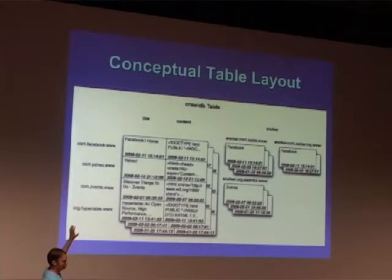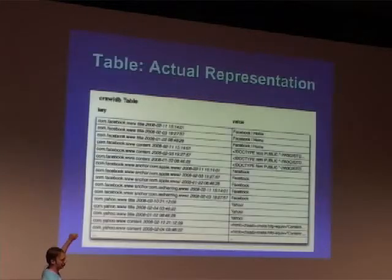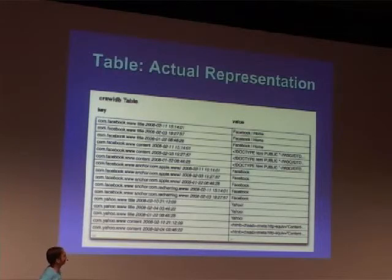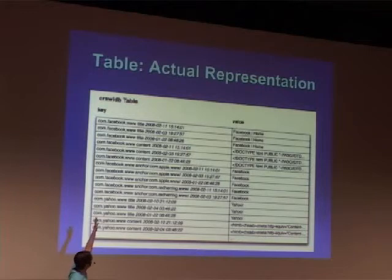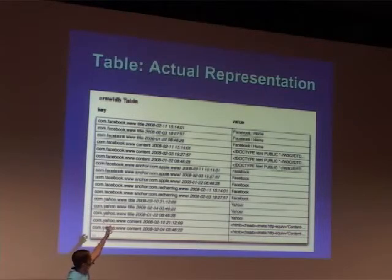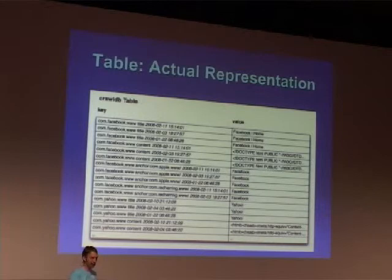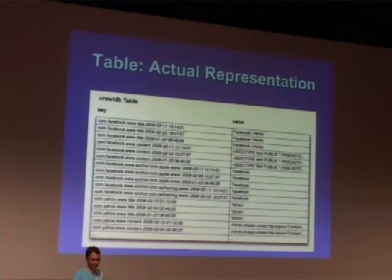This three-dimensional representation actually just flattens out into a sorted list of key-value pairs. The key is the row key, the column qualifier, and the timestamp. If you look through the code, you'll see a lot of sorted lists of key-value pairs.